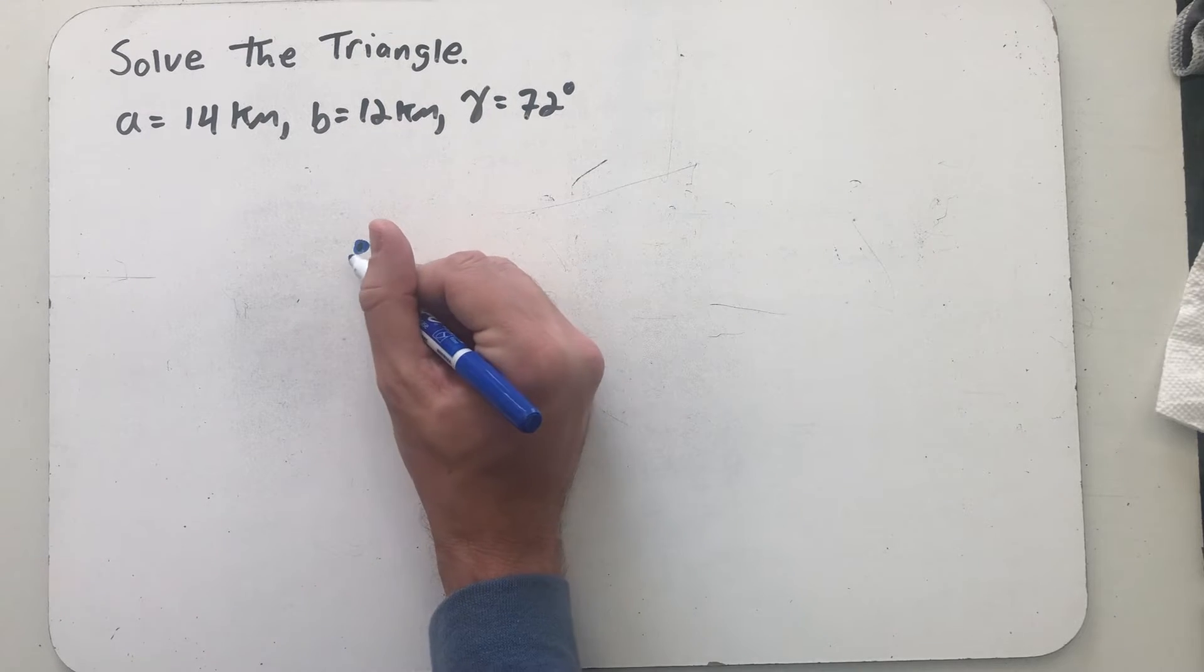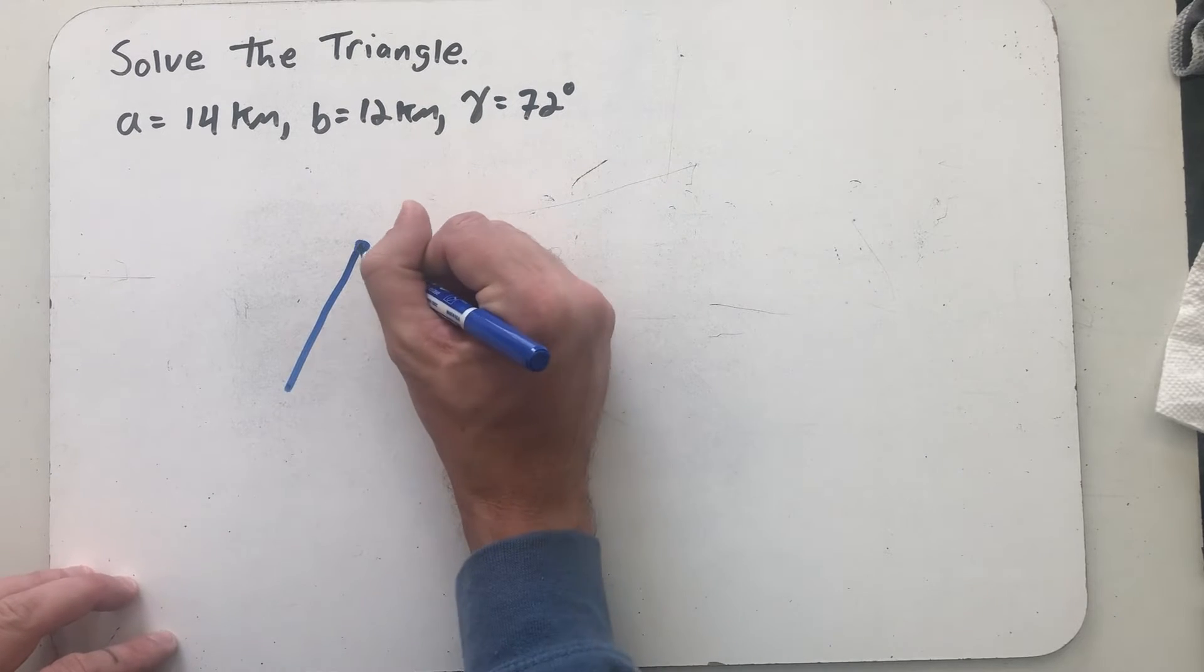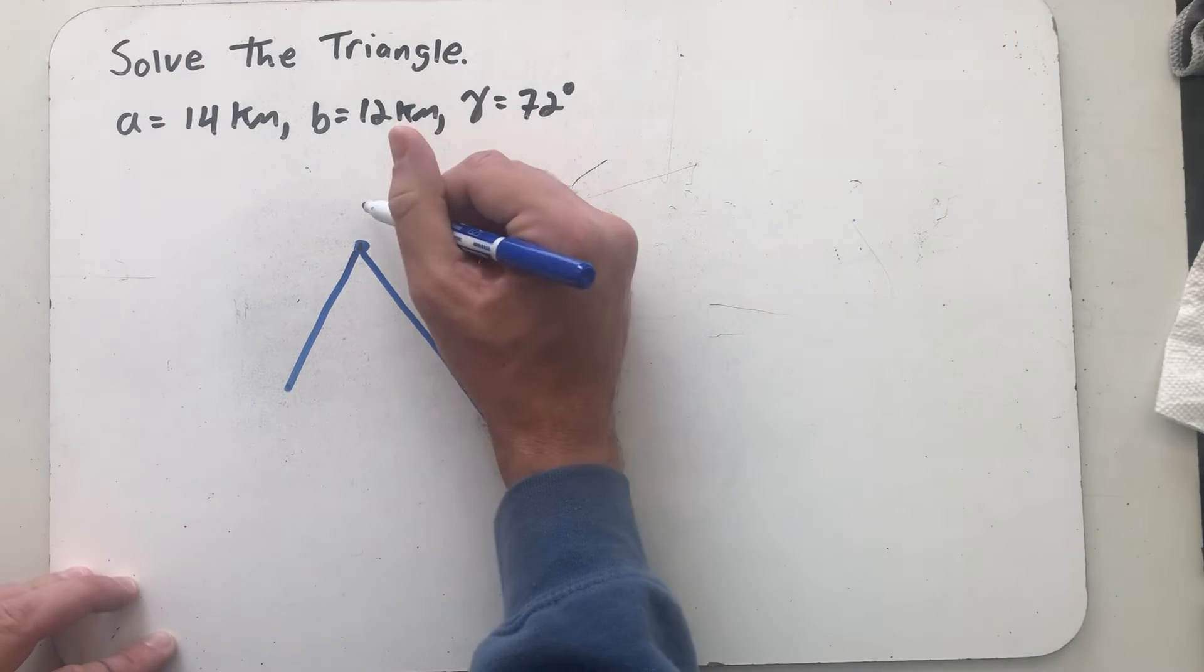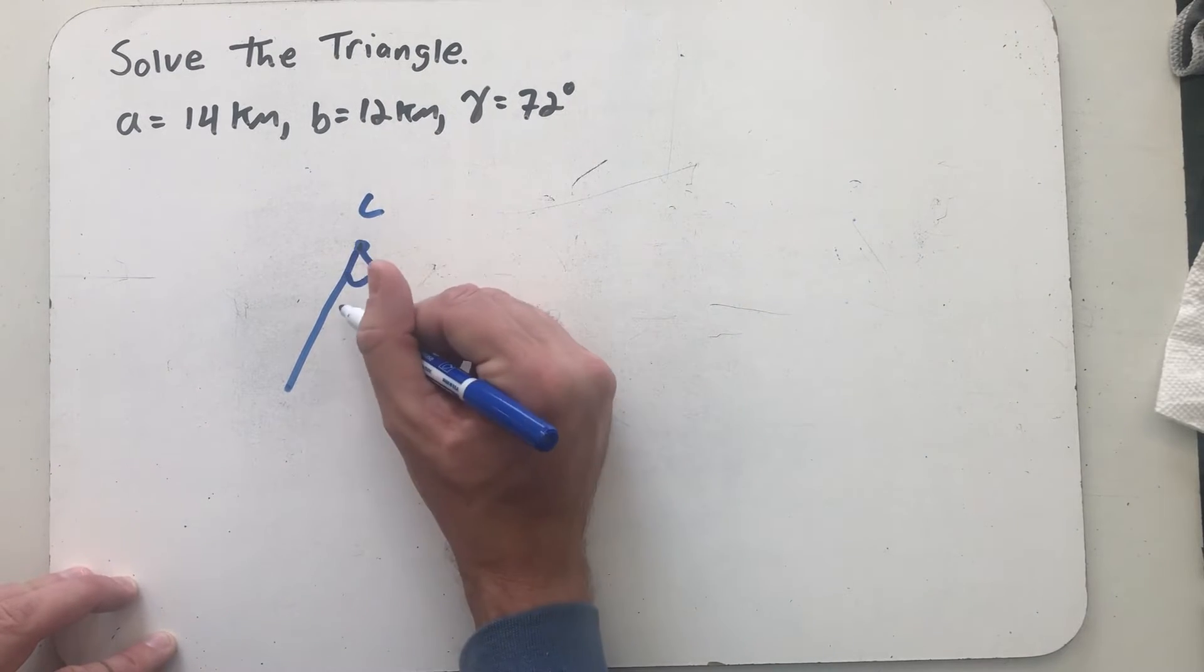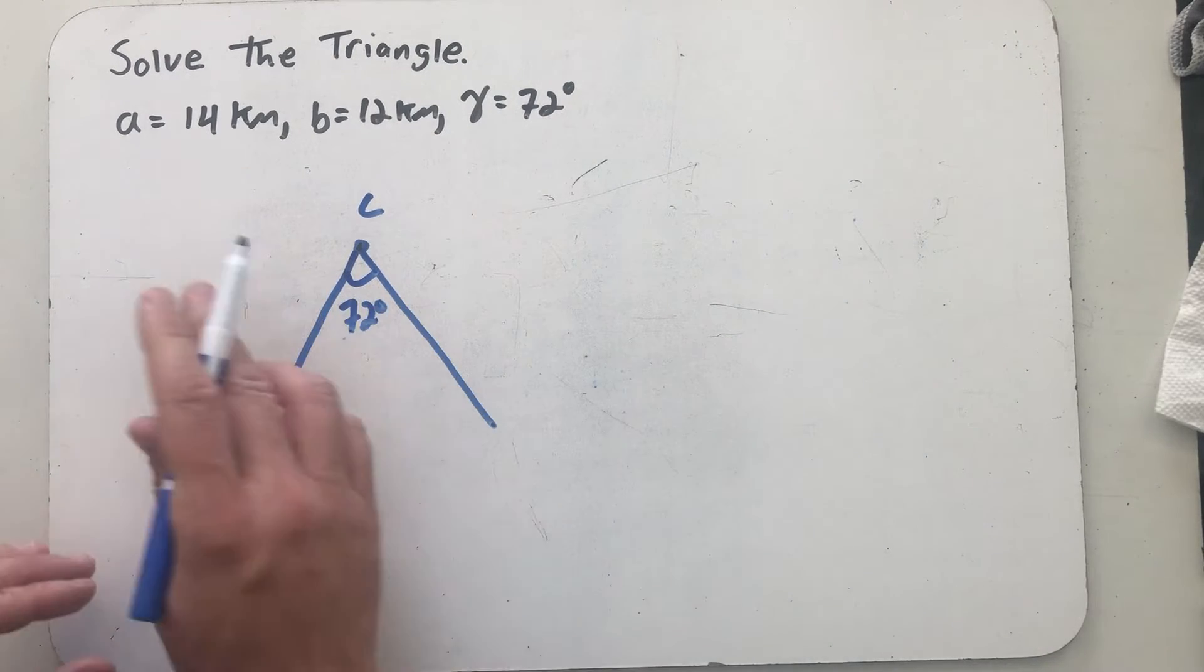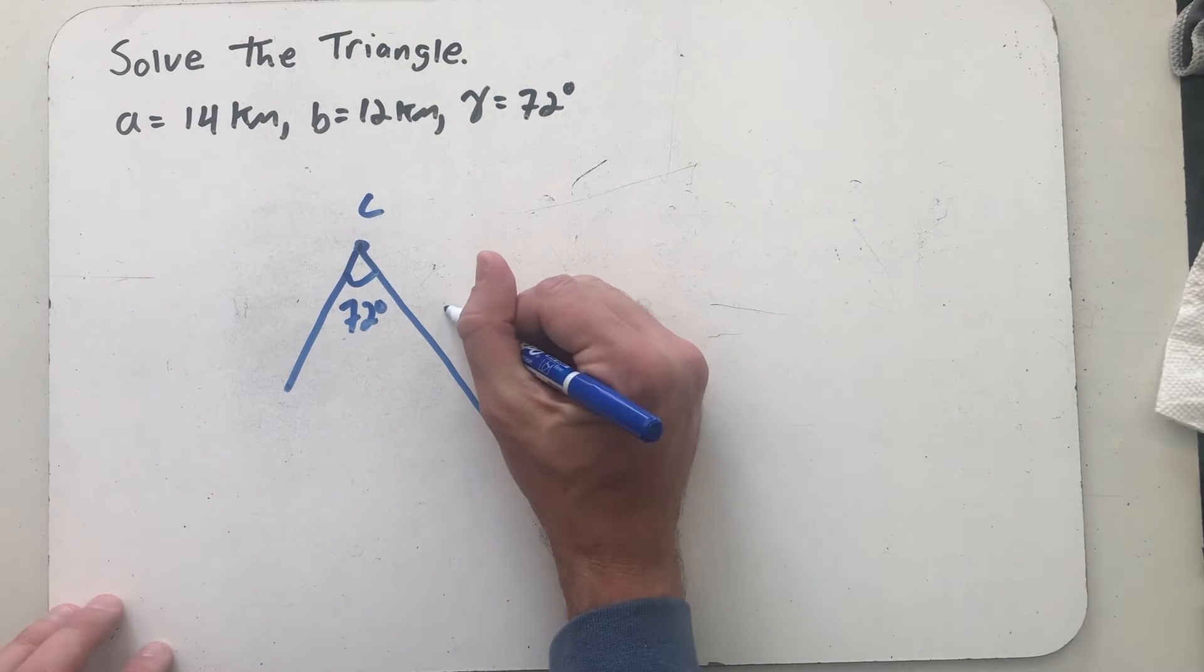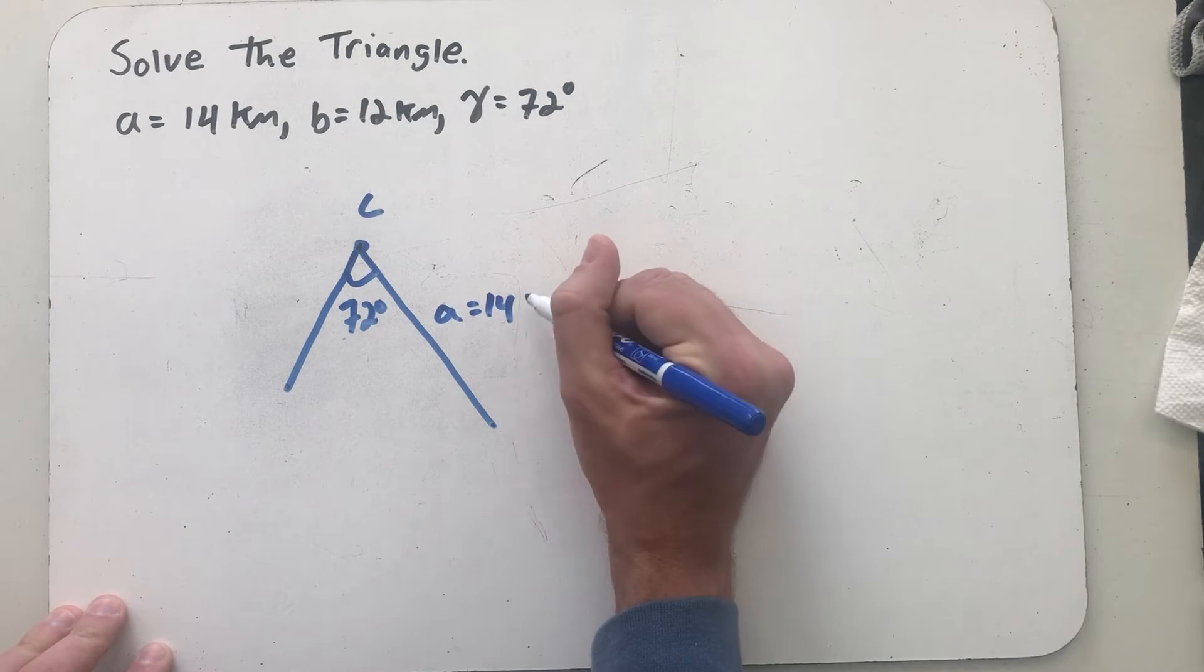I'm gonna imagine drawing about a 72 degree angle. That makes C up here and now let that be my 72 degree angle. And so I have a longer side and a shorter side, so I drew one longer than the other.